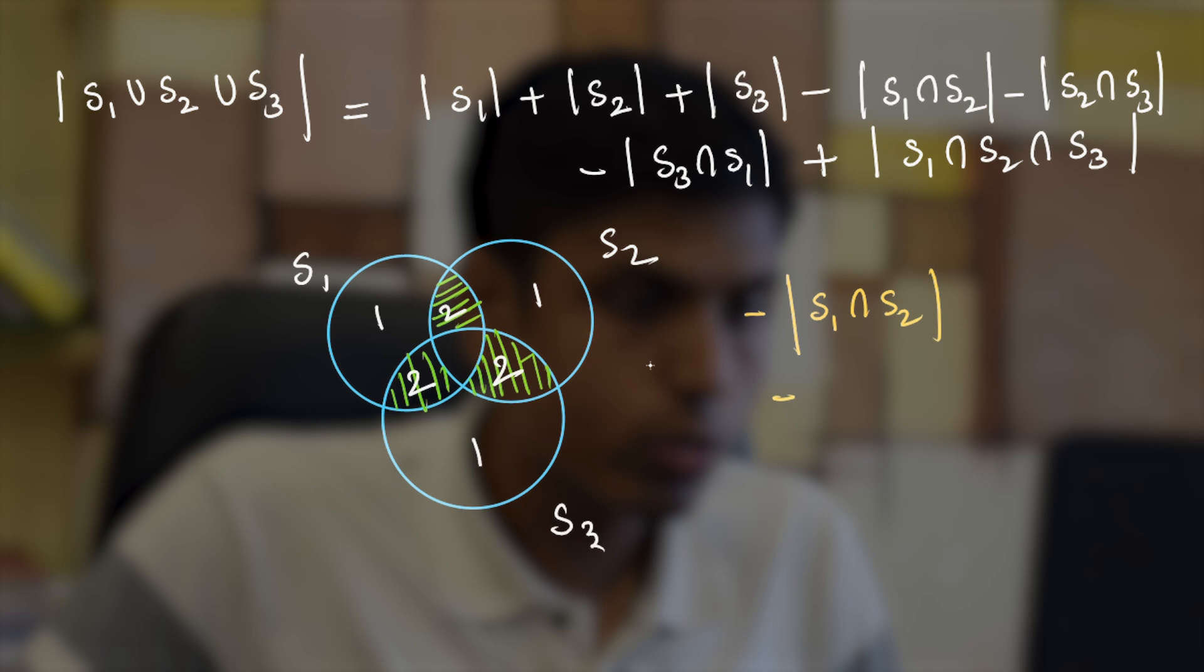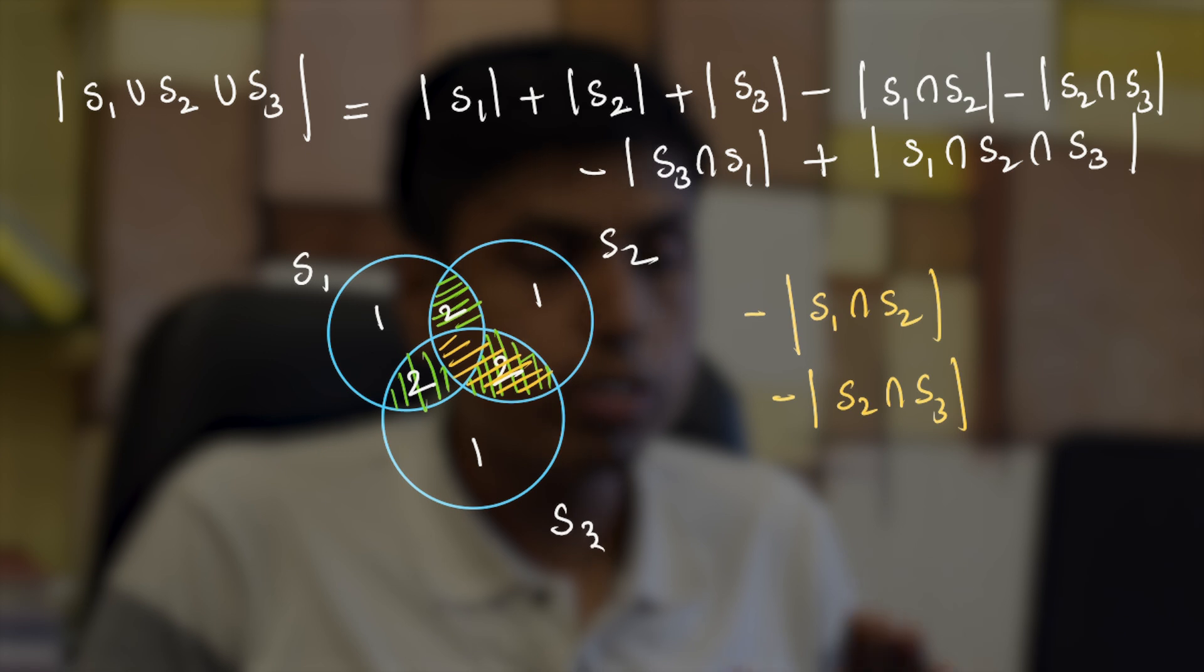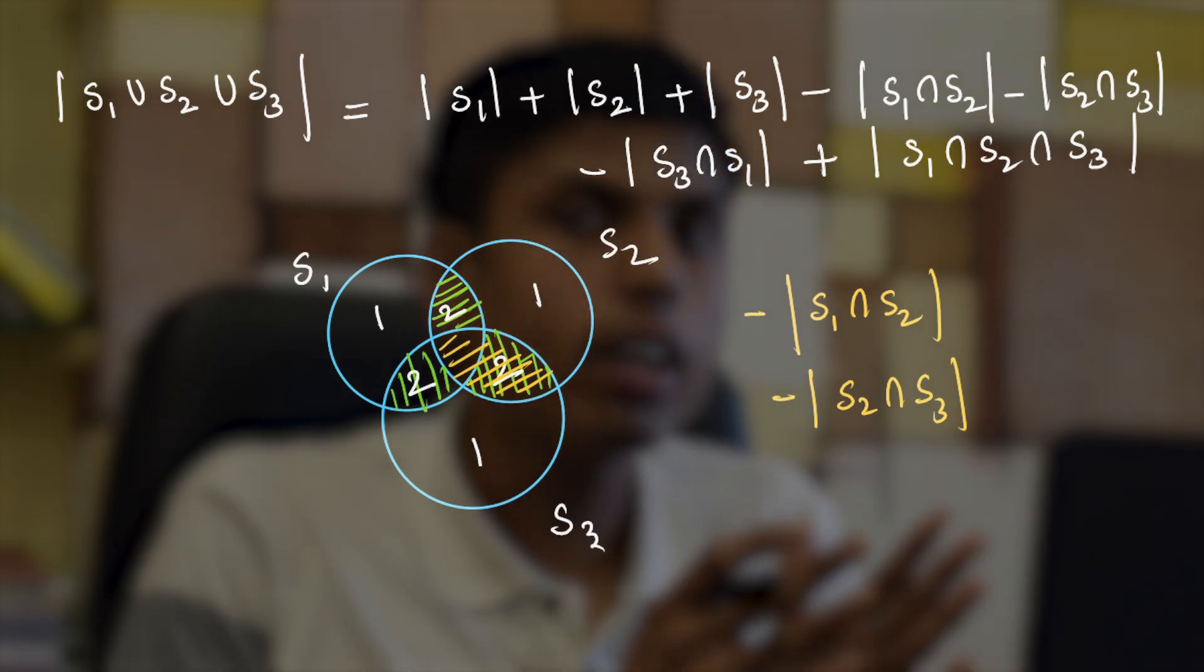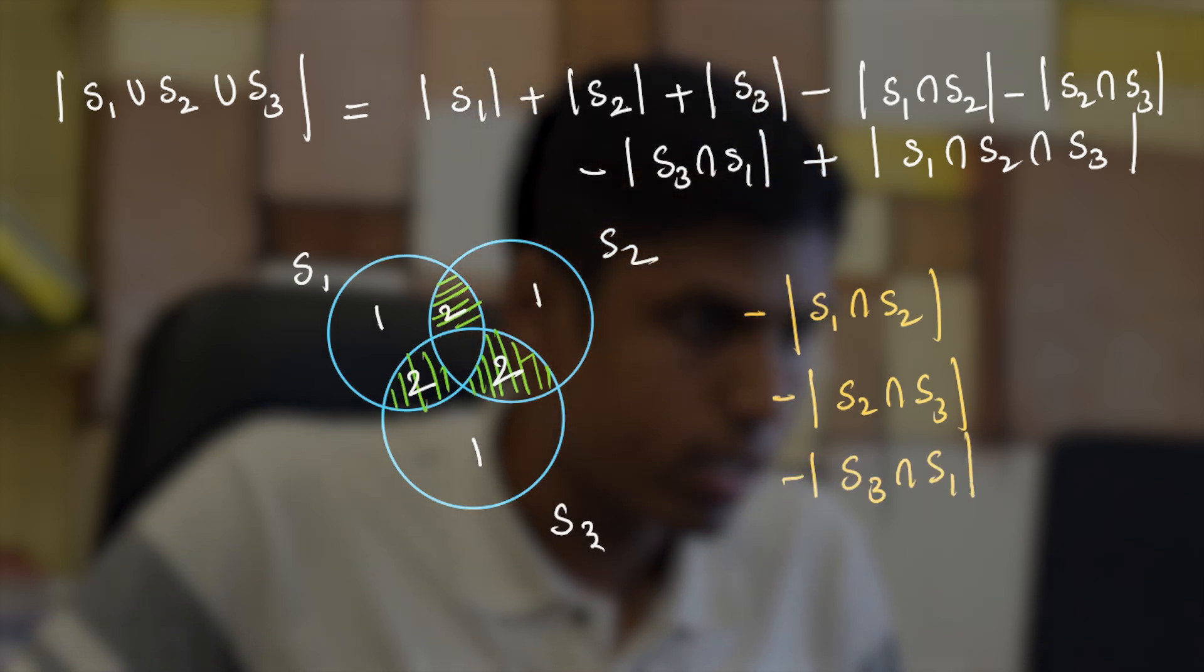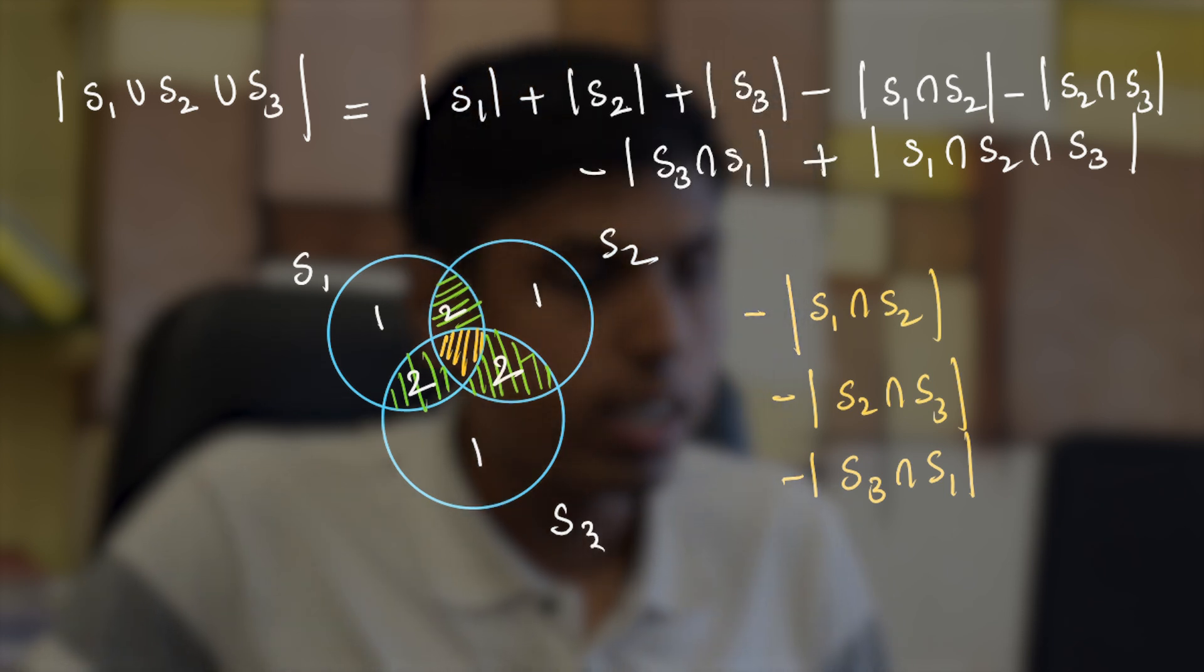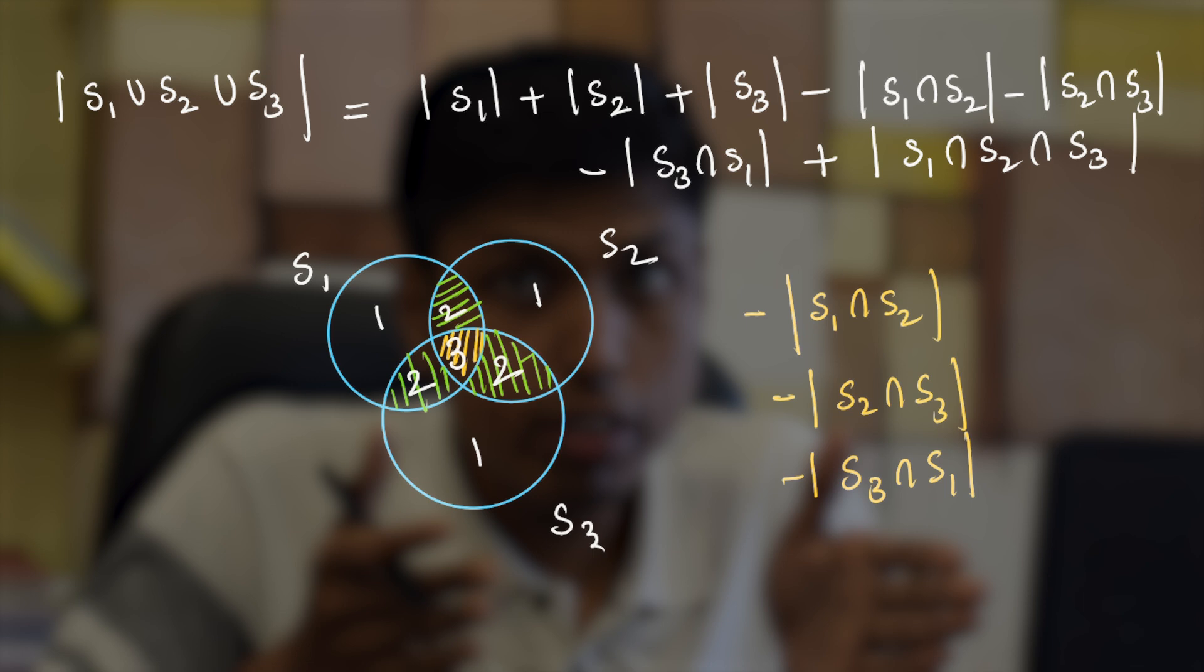When you subtract S2 intersection S3 you actually get rid of that overcounting which was done when you added the individual cardinalities. And similarly for S1 intersection S3. But when you think about the part in the interior which is the intersection of all three, they were counted thrice when you added individual cardinality.